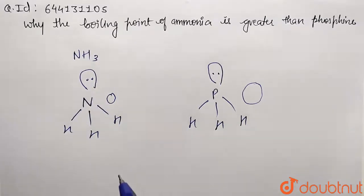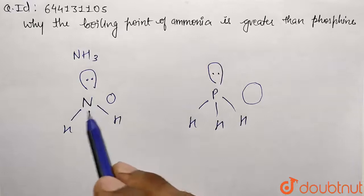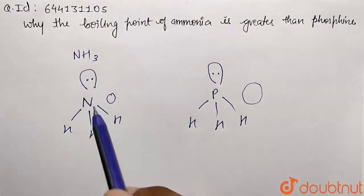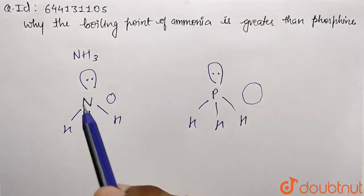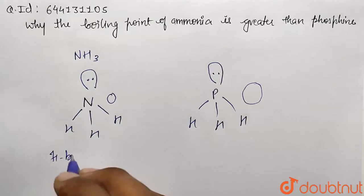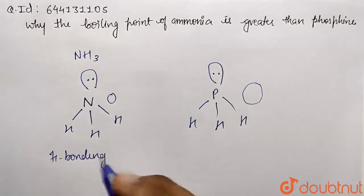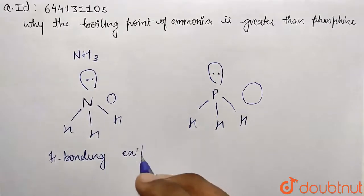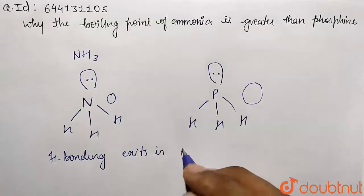And that's why we can say due to the existence of hydrogen bonding in the nitrogen atom of NH3 due to more electronegativity, it's going to show the higher boiling point. So we can mention here: hydrogen bonding exists in NH3 molecules.